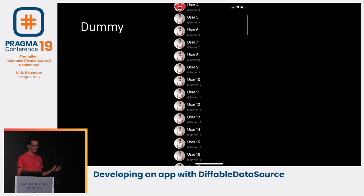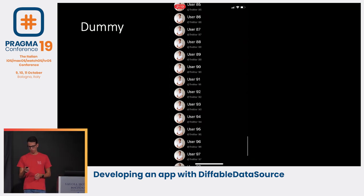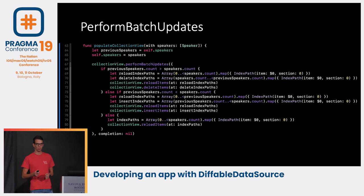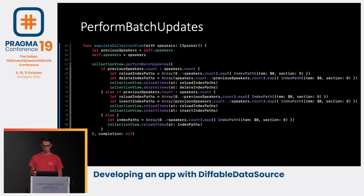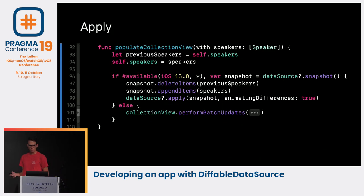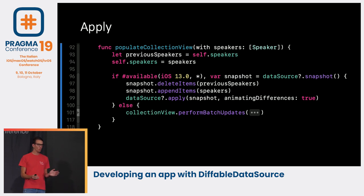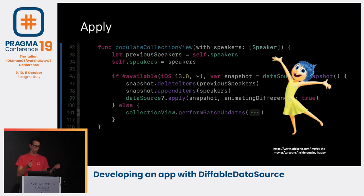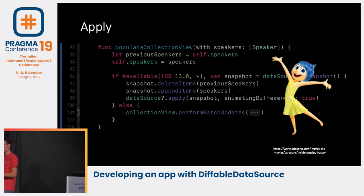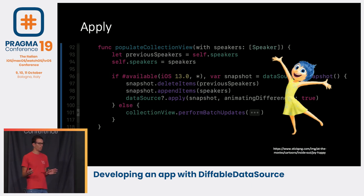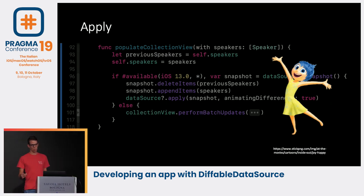We now have exactly the same result as before but using the diffable data source. The best part: replacing that huge performBatchUpdates is now just three lines of code. We check if we're on iOS 13, take the current snapshot, delete all our previous speakers, append the new speakers, and call apply. It magically works. You can also recreate a fresh snapshot and append all sections and items — the result looks exactly the same, but sometimes you won't have access to all data models, so fetching the snapshot from the data source is useful.